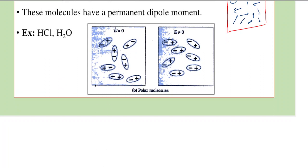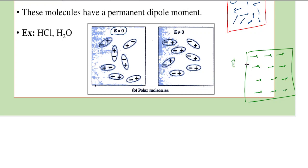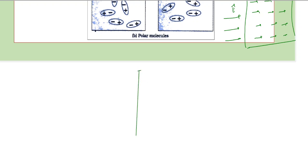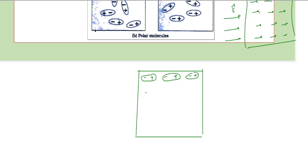Even if the applied field is zero, the net dipole moment is zero. If we apply a field, the dipoles will be aligned in a given direction. Earlier they were aligned randomly, but now in the presence of an external field these are aligned in a given direction. Reading out the diagram, we get that each dipole is aligned with minus on one side and positive on the other — each molecule is aligned in the direction of the field.